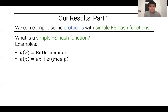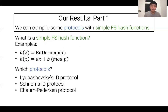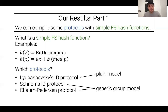By a simple non-cryptographic Fiat-Shamir hash function, I mean things like computing the bit decomposition of a vector — taking a vector over Z_q and expanding each element into its bit string representation — or a hash function that computes a linear function of its inputs. These hash functions satisfy no obvious cryptographic properties; they're totally invertible. Yet we show they compile protocols such as Lubaczewski's ID protocol, Schnorr's protocol, and the Chaum-Pedersen protocol. The Lubaczewski result is in the plain model; our group-based results are in the generic group model.